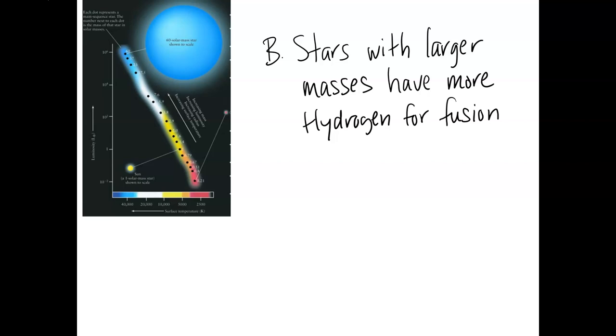Here's a picture of our main sequence again. And so right now, what I want you to understand is how a bigger star could have a shorter lifetime. So we start out with more mass. What does that mean?